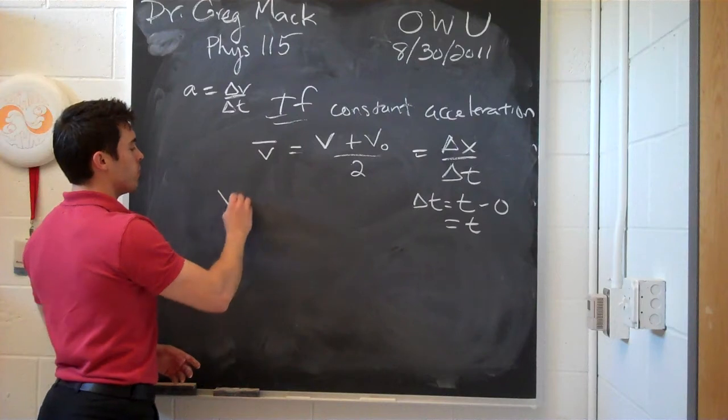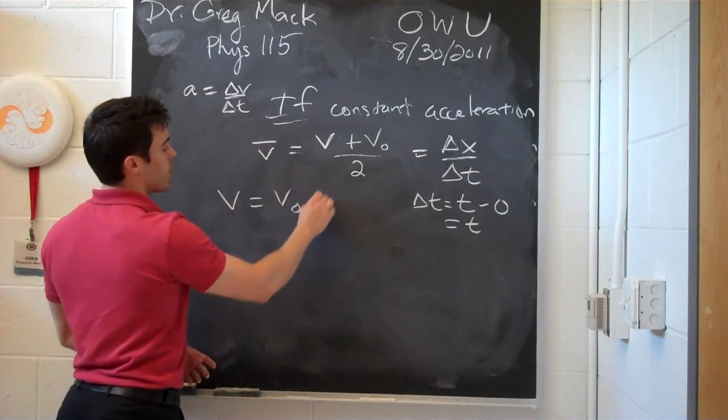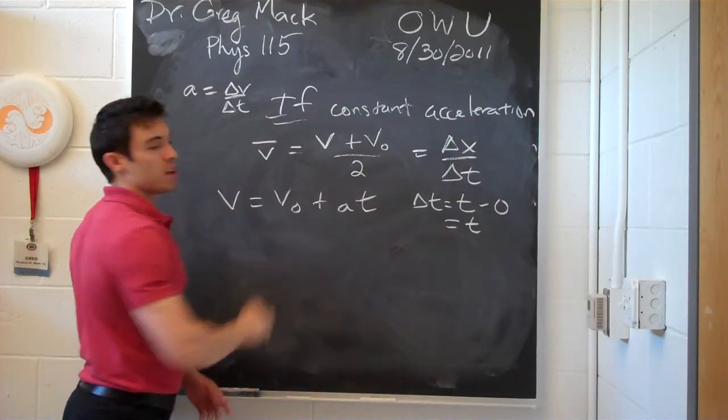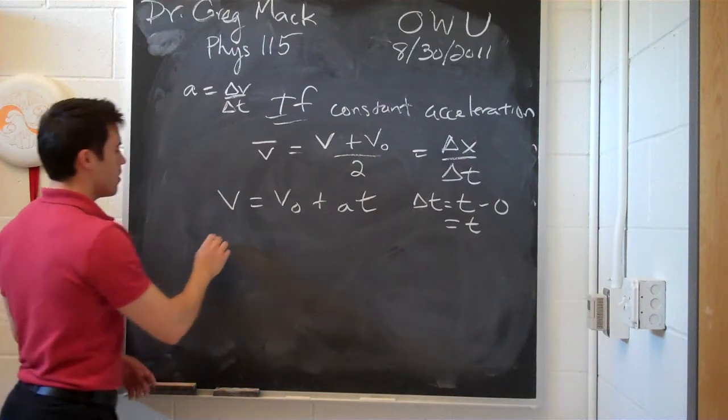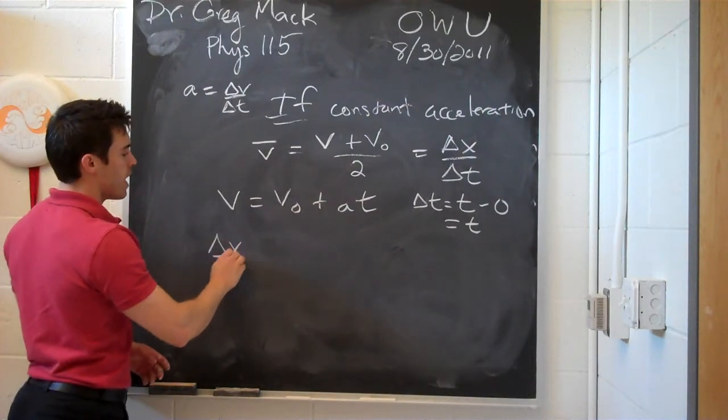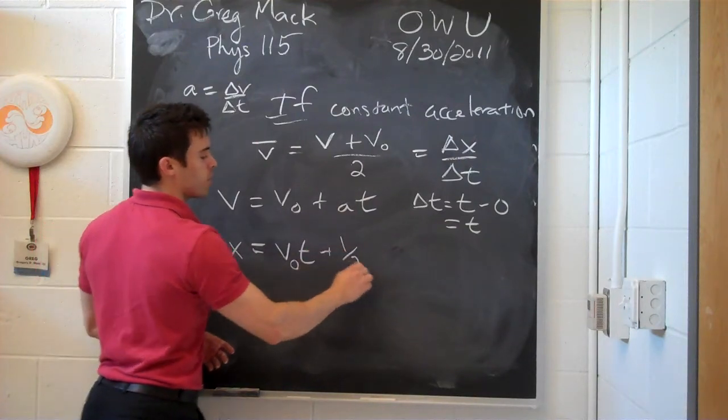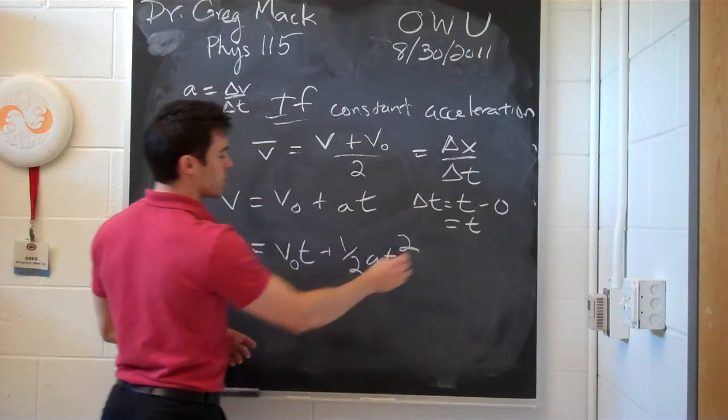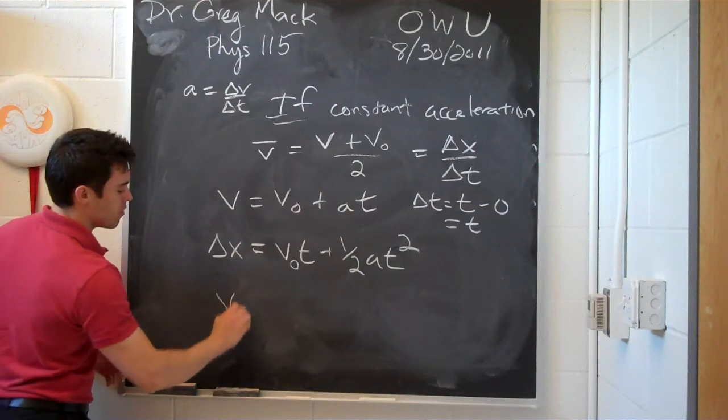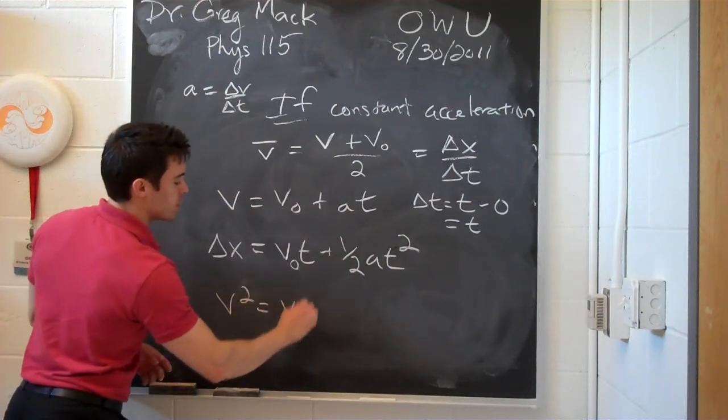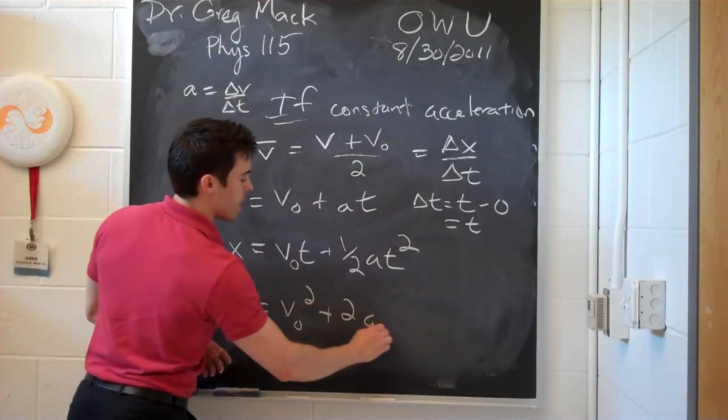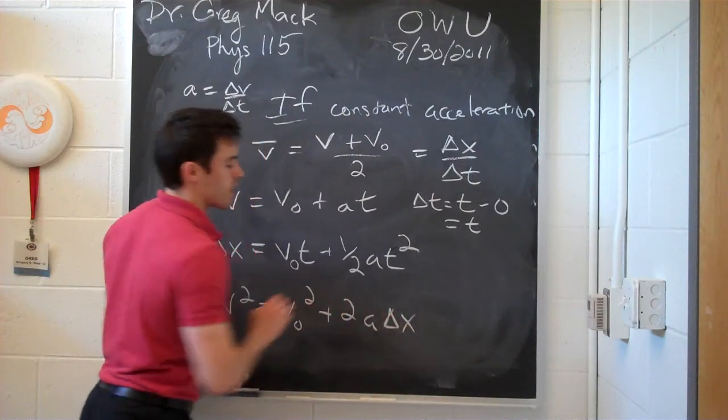Then you can say that v is equal to v0 plus at, and delta x is equal to v0 t plus 1 half at squared, and v squared is equal to v0 squared plus 2a delta x.